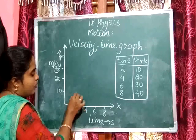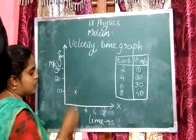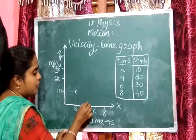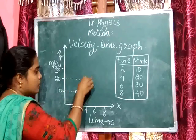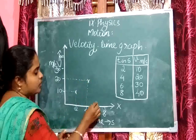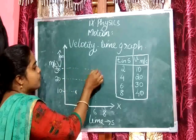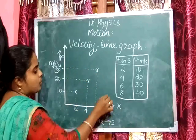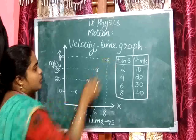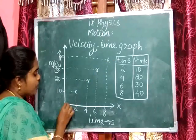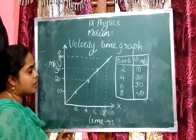After 2 seconds, the object travels with a speed of 10 m/s. After 4 seconds, it travels at 20 m/s. After 6 seconds, it travels at 30 m/s, and after 8 seconds it is 40 m/s. If we join these points, we get a straight line.